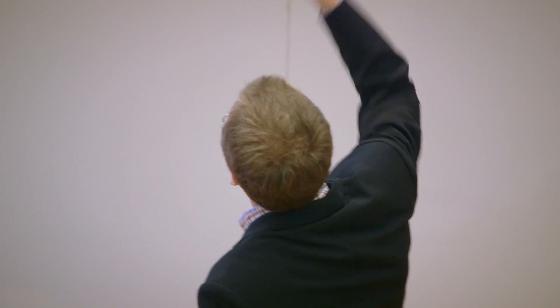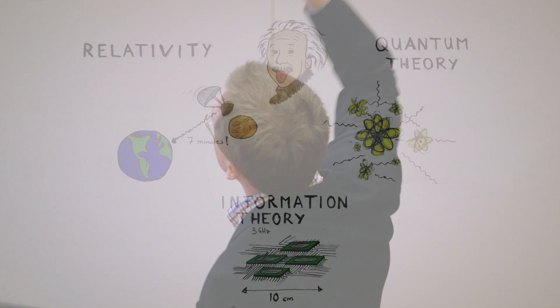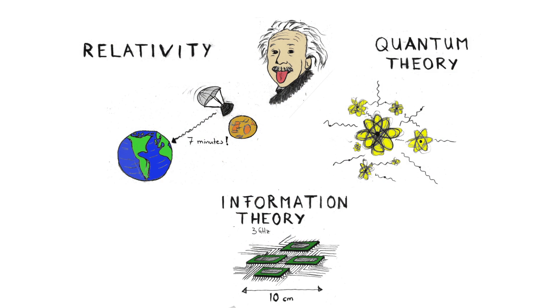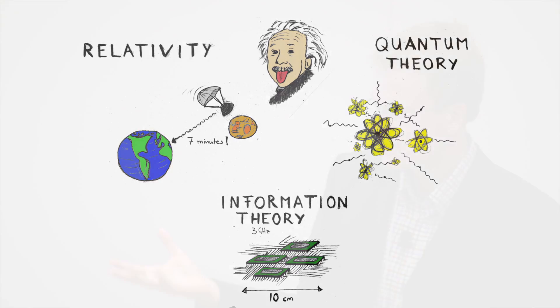Finally, the link between quantum theory and relativity is missing. This is the biggest open problem in theoretical physics today. We don't have a unified theory yet which describes both relativistic and quantum effects. The idea behind my research is to study their interplay using information theory as a link.